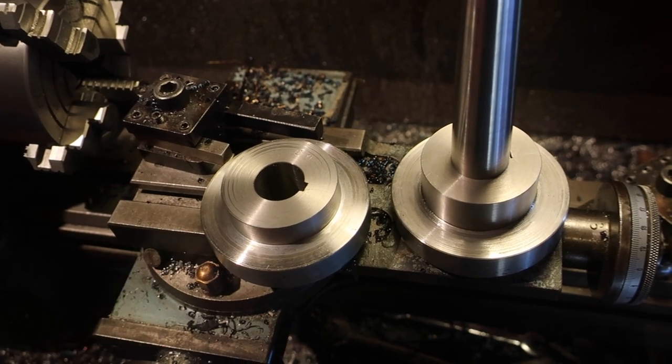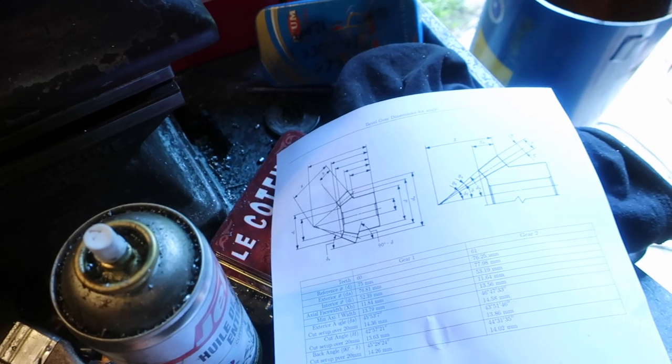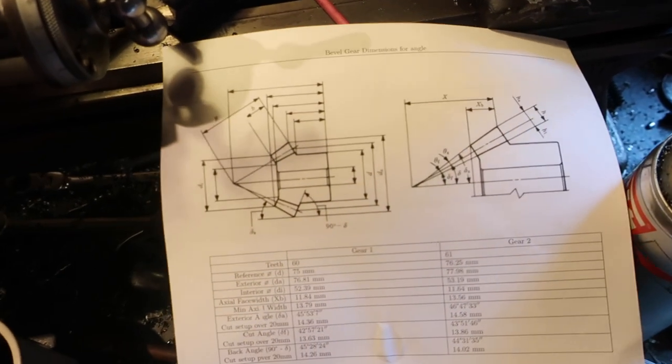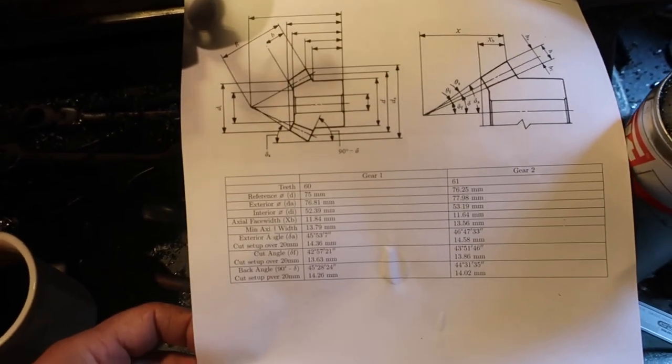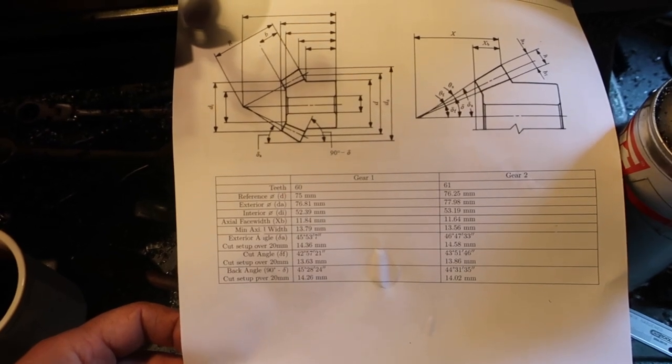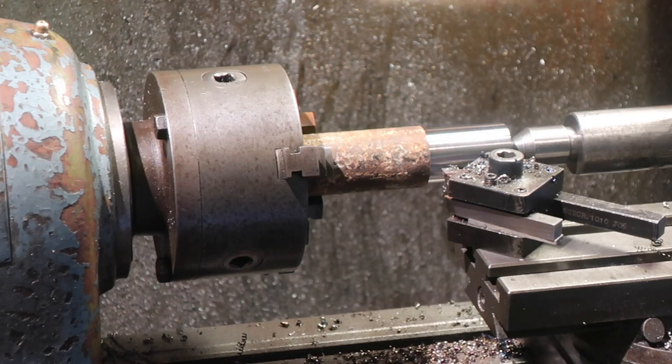The way that we're going to do this is using this piece of paper, which is the output from a program I wrote to calculate the angles and dimensions for bevel gears. It's not complete yet but it's enough for this stage at least.